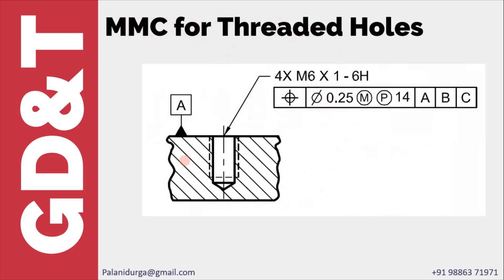Here I am taking a threaded hole as an example. We have M6 x 1 pitch and the positional tolerance is specified with maximum material condition. People say that M6 x 1 does not have a tolerance, so we cannot get an upper limit and lower limit, or maximum material condition and least material condition. What most people miss is the '6H' portion of that dimension — M6 x 1 - 6H. The 6H is the tolerance class for the thread.